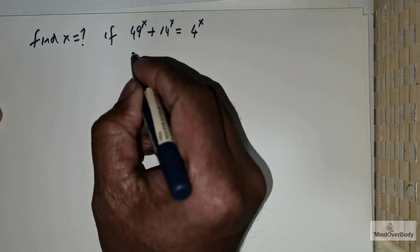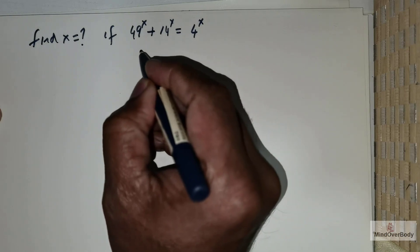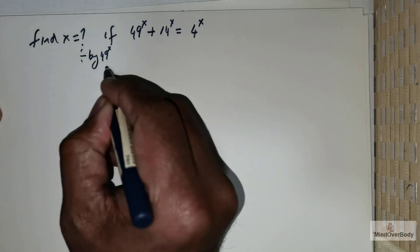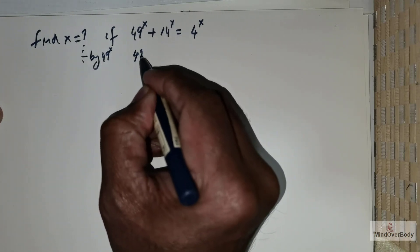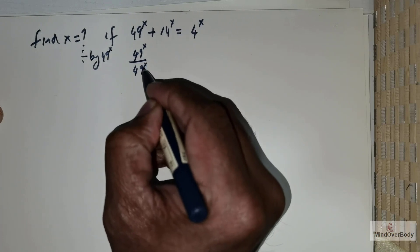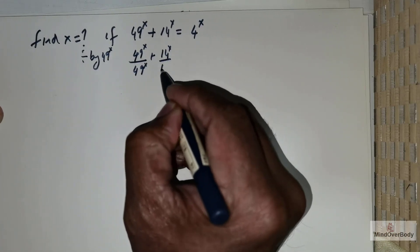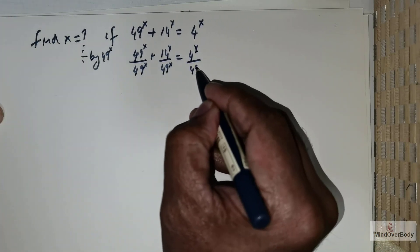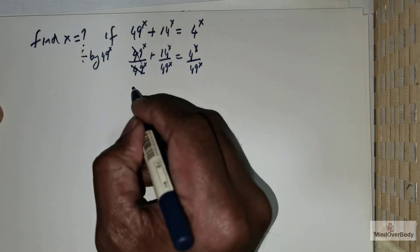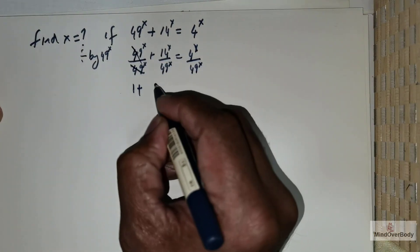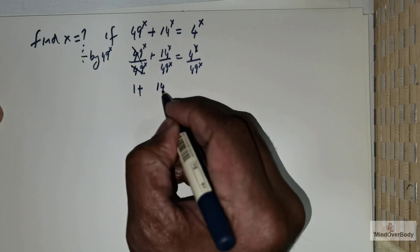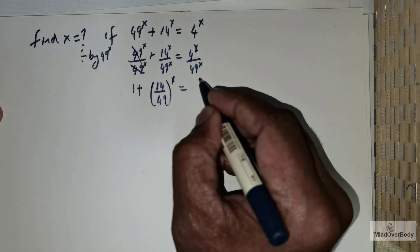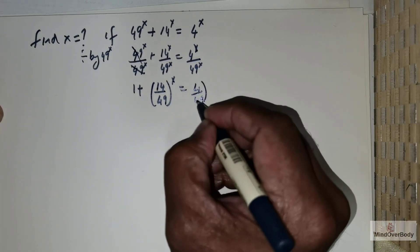I am going to rewrite this equation by dividing through by 49 raised to the power x. So this is going to be 49^x divided by 49^x, plus 14^x divided by 49^x, is equal to 4^x divided by 49^x. Now clearly the first term cancels giving me 1 plus 14 over 49 raised to the power x, which is equal to 4 over 49 raised to the power x.